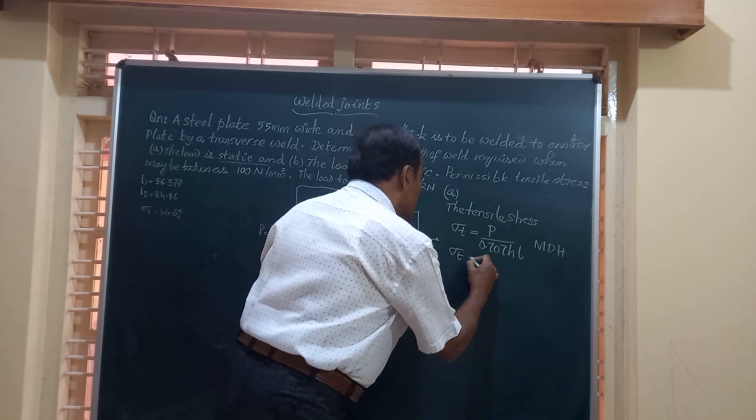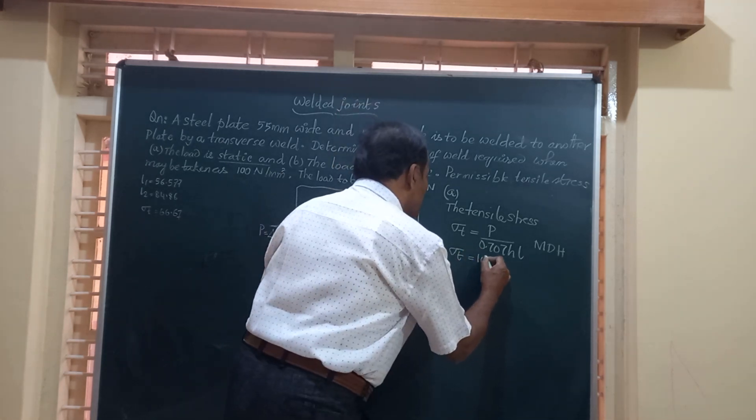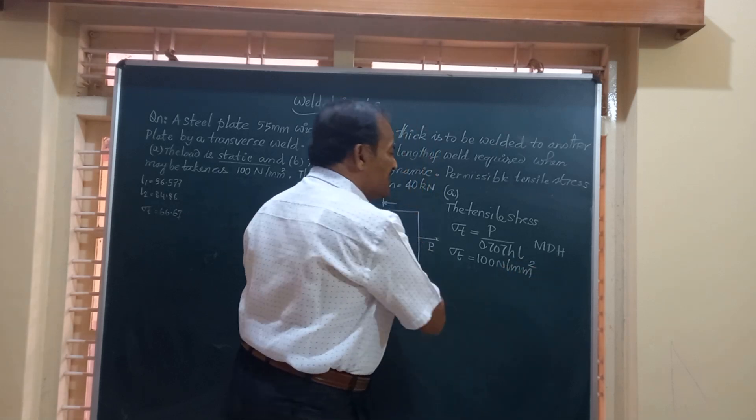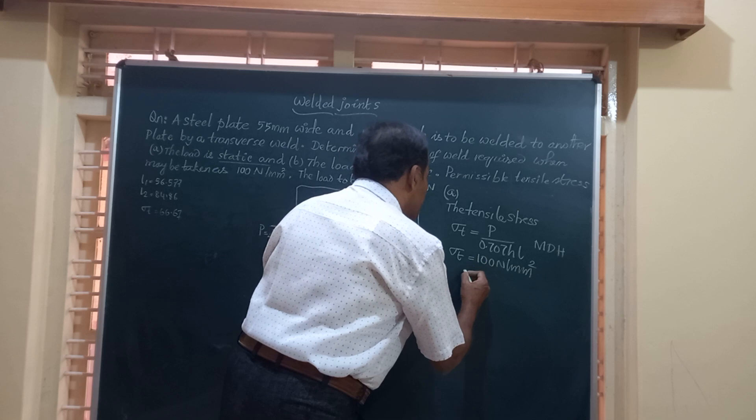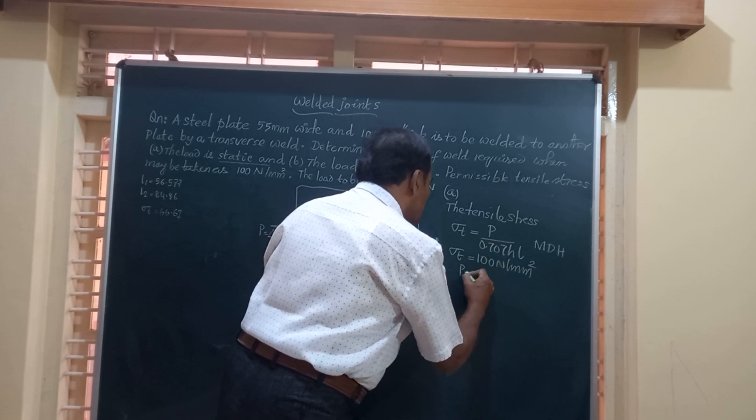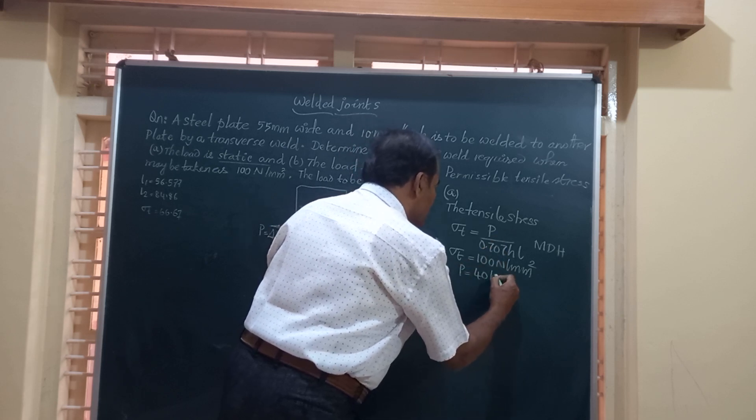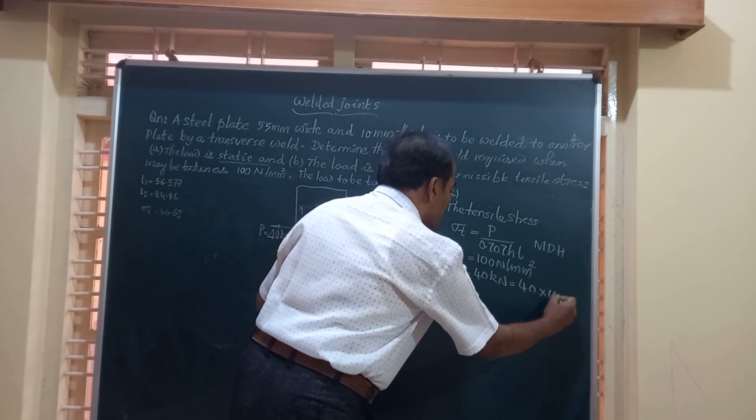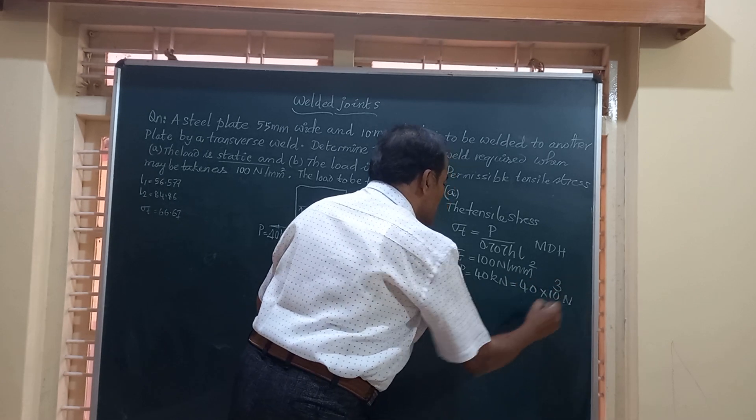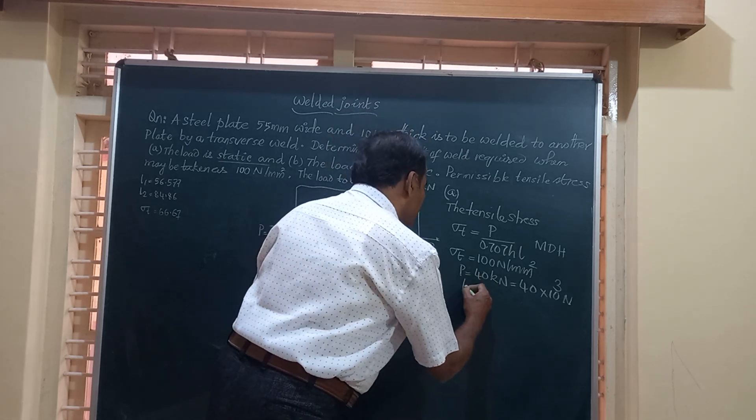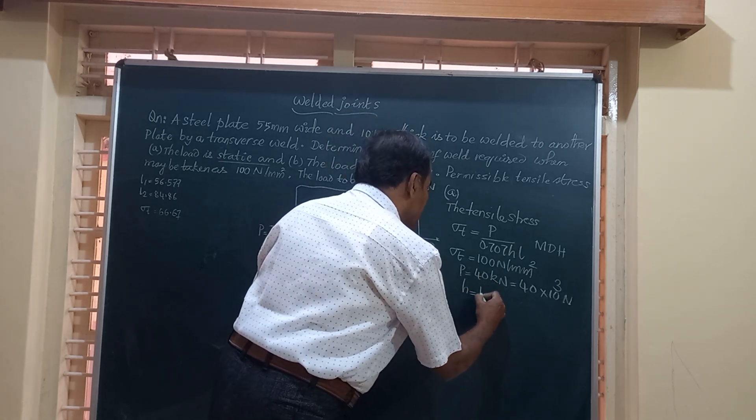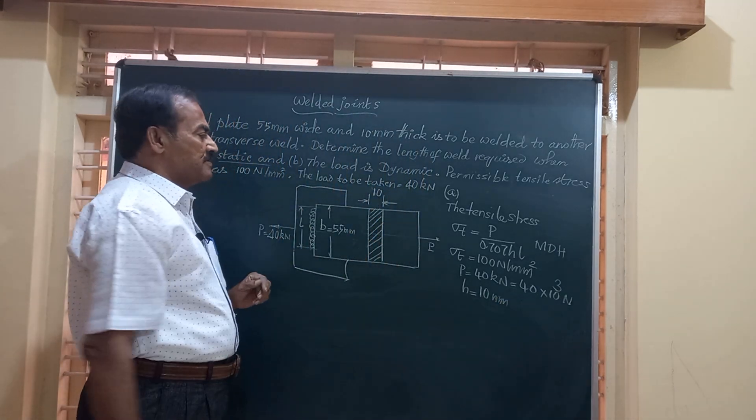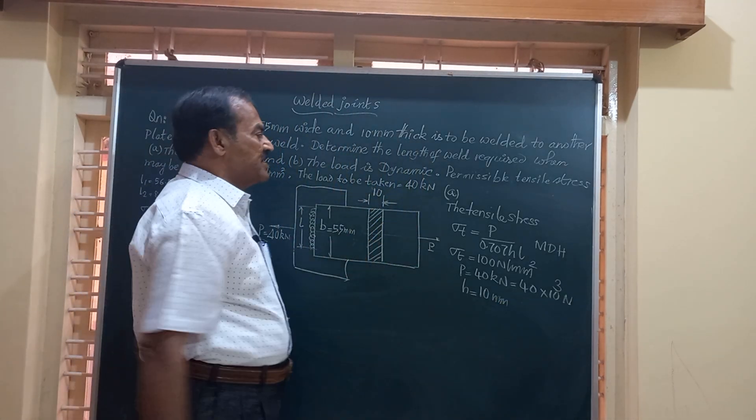Friends, here this sigma tensile is given to be equal to 100 Newton per mm square. Load P is 40 times 10 to the power of 3 Newton. And friends, the value of H is the thickness of the plate, that is 10 millimeter.